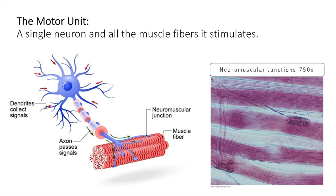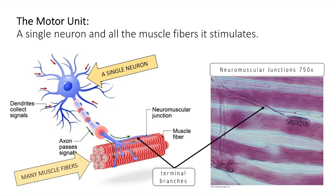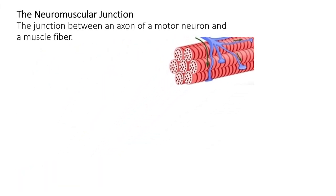The voluntary skeletal muscle cells must be stimulated by motor neurons via nerve impulses. Each axon of the motor neuron usually divides into many branches called terminal branches as it approaches the muscle. Each of these branches ends in an axon terminal that participates in forming a neuromuscular junction with a single muscle fiber. Because of this, a single neuron may stimulate many muscle fibers. Together, the neuron and all the muscle fibers it stimulates make up the functional structure called the motor unit.